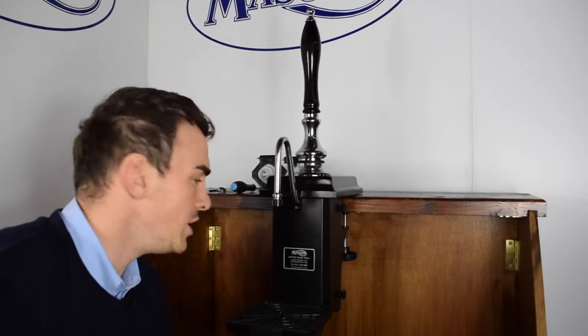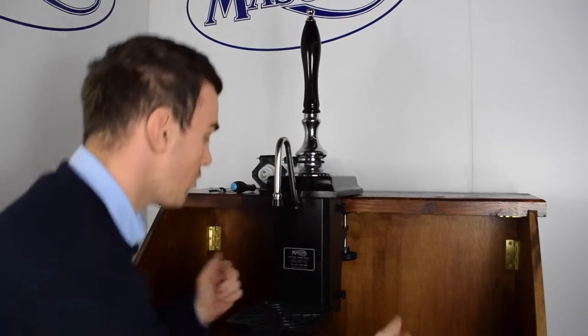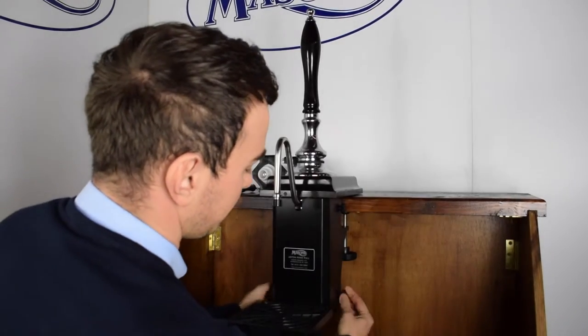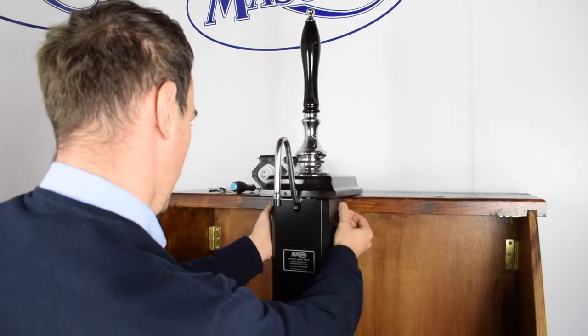The first step of replacing the cylinder on an Aston hand pull is to remove the front cover. Start with the knob screws at the bottom and work your way up.